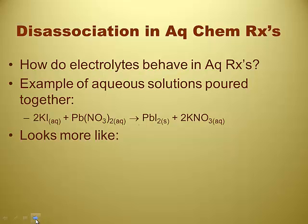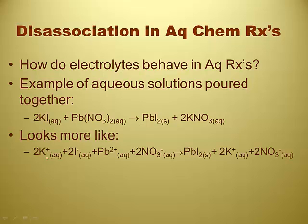We can look at this even closer. The potassium iodide here is actually soluble, so it's going to break apart when you put it into solution. It really doesn't look like potassium iodide — it really looks like potassium ions and iodide ions. The two in front of the potassium and iodide came from the balanced equation: there were two potassium iodides, which means there were two potassium ions and two iodide ions.